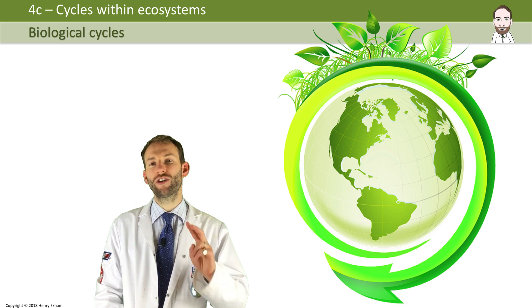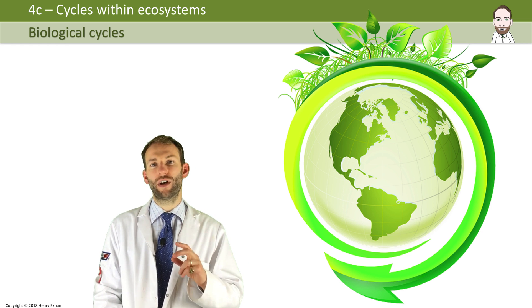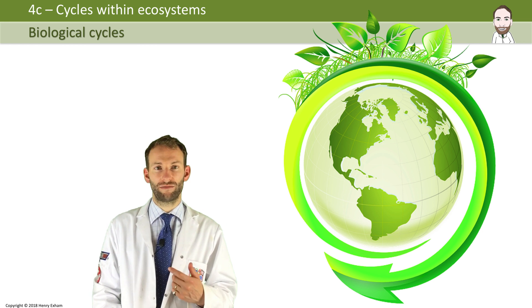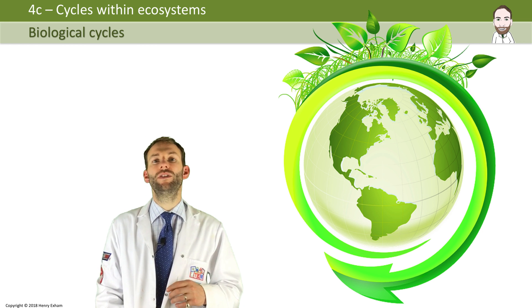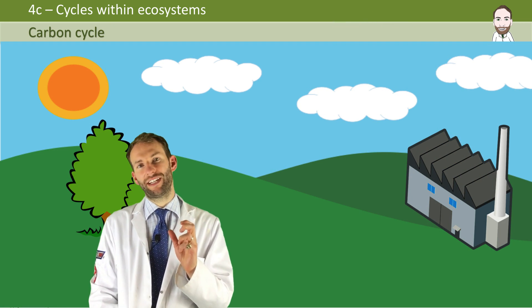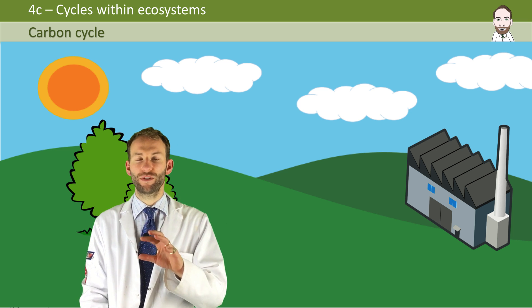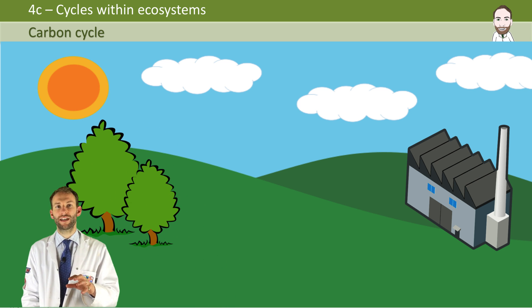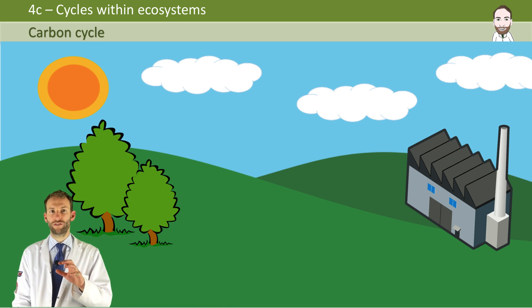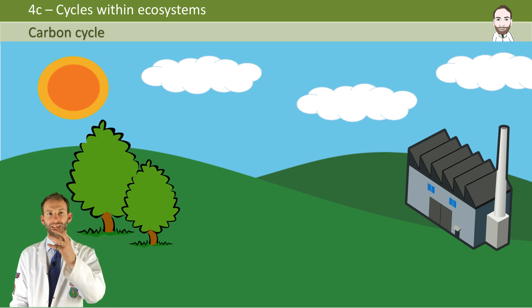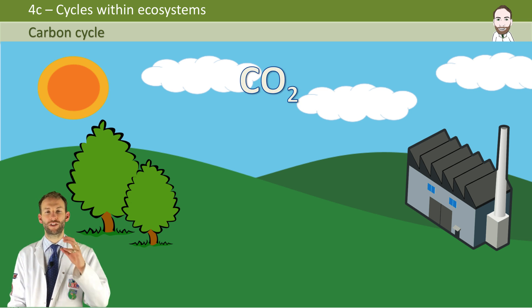We're going to look at two specific elements and how they are recycled — carbon and nitrogen. Some people find these cycles really, really hard, but I think it's really easy if you start off with a simple diagram like this and look at it, starting with the gas in the air. In the carbon cycle, the most important gas is carbon dioxide.